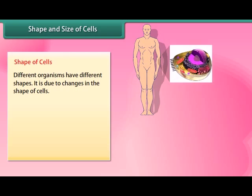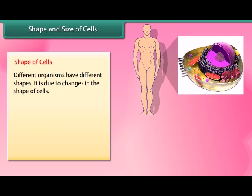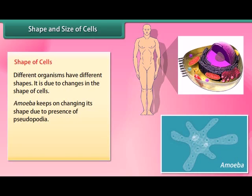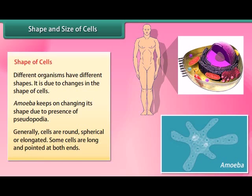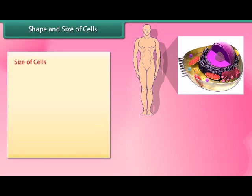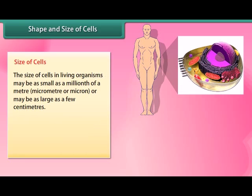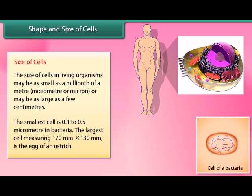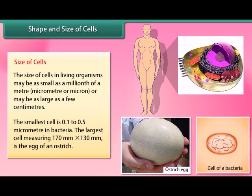Cells vary in shape and size. Different organisms have different shapes due to changes in the shape of their cells. Amoeba keeps changing its shape due to the presence of pseudopodia. Generally cells are round, spherical, or elongated, and some are long and pointed at both ends. The size of cells may be as small as a millionth of a meter (micrometer) or as large as a few centimeters. The smallest cell is 0.1 to 0.5 micrometers, found in bacteria. The largest cell, measuring 170 mm × 130 mm, is the egg of an ostrich.